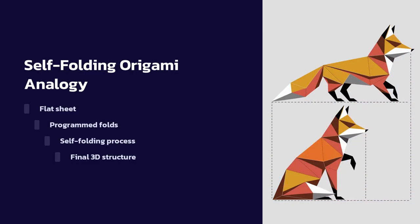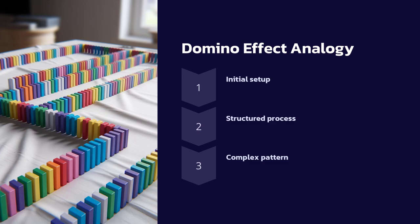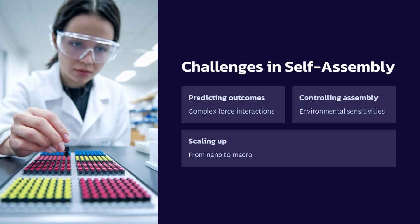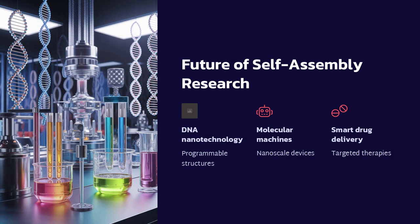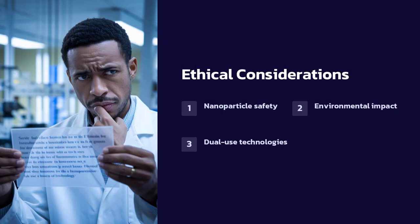Self-assembly is not the same as life, but it raises fundamental questions. If molecules can spontaneously form complex structures, where is the boundary between simple chemical interactions and biological function? Could self-assembly have been the key process that led to the origin of life? And if self-assembly follows predictable laws, why do some biological systems exhibit emergent complexity, where collective molecular interactions create something entirely new, like consciousness, metabolism, or self-replication?